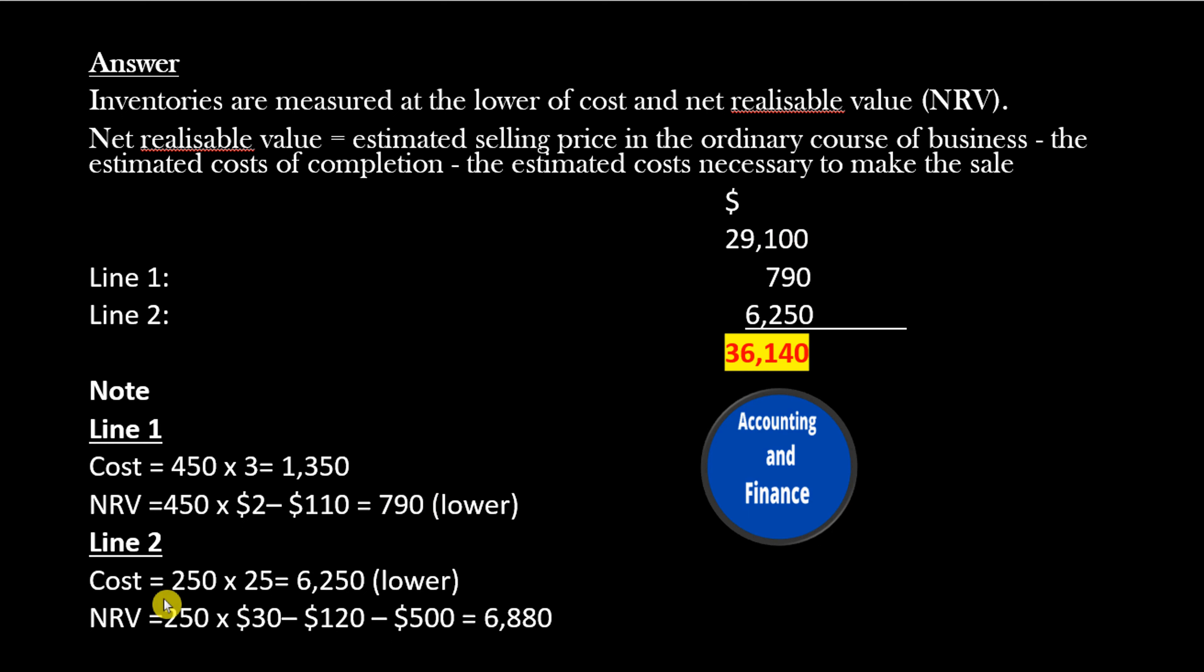Line 2: Cost equals 250 times $25 equals $6,250 (lower). NRV equals 250 times $30 minus $120 minus $500 equals $6,880.